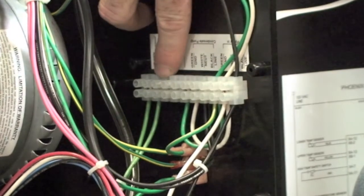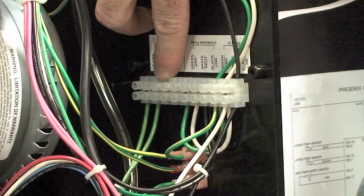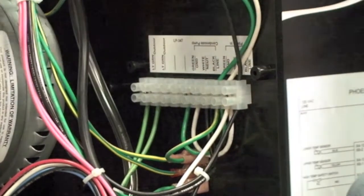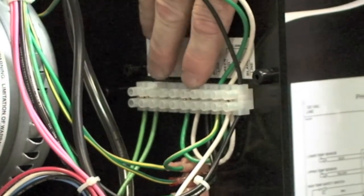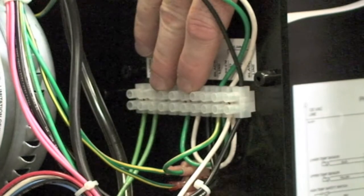The other connection on this terminal strip is what we call outdoor reset. We talked about the ability to do some space heating off the auxiliary taps, and this will give our control the ability to do outdoor reset, which we will talk about later.